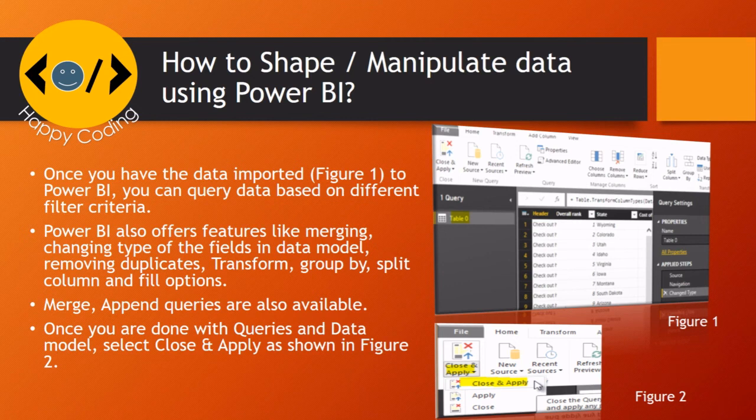How to shape or manipulate data using Power BI? Once you have the data imported, refer Figure 1, you can query data based on different filter criteria. Power BI also offers features like merging, changing type of the fields in data model, removing duplicates, transform, group by, split column, and fill options. Merge and append queries are also available. Once you are done with queries and data model, select Close and Apply as shown in Figure 2.